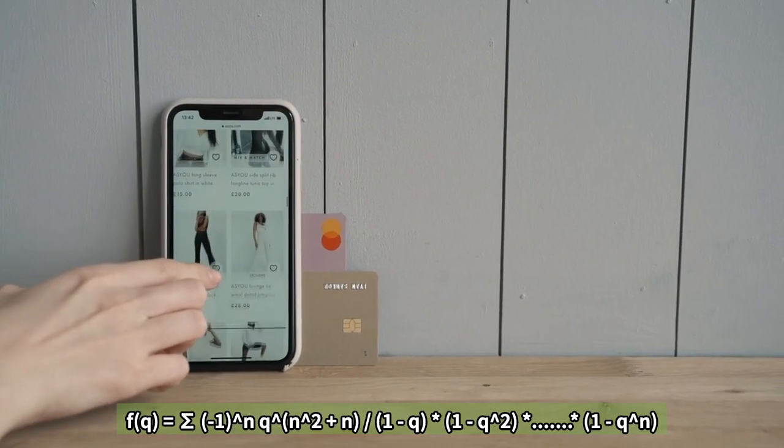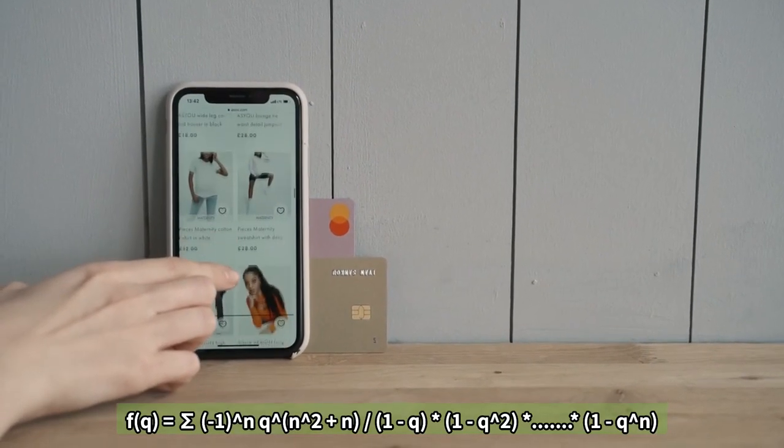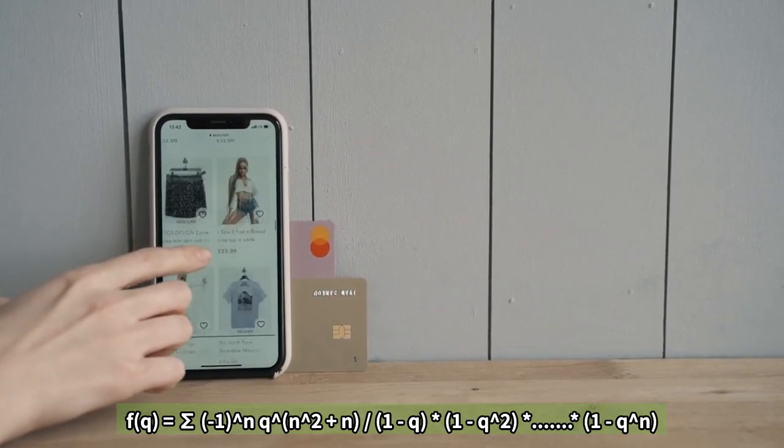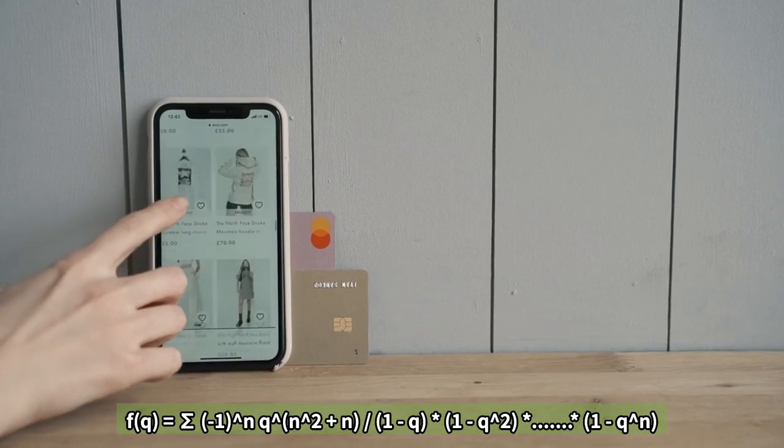f(q) equals sigma (-1)^n q^(n^2 + n) over (1 - q)(1 - q^2)...(1 - q^n).